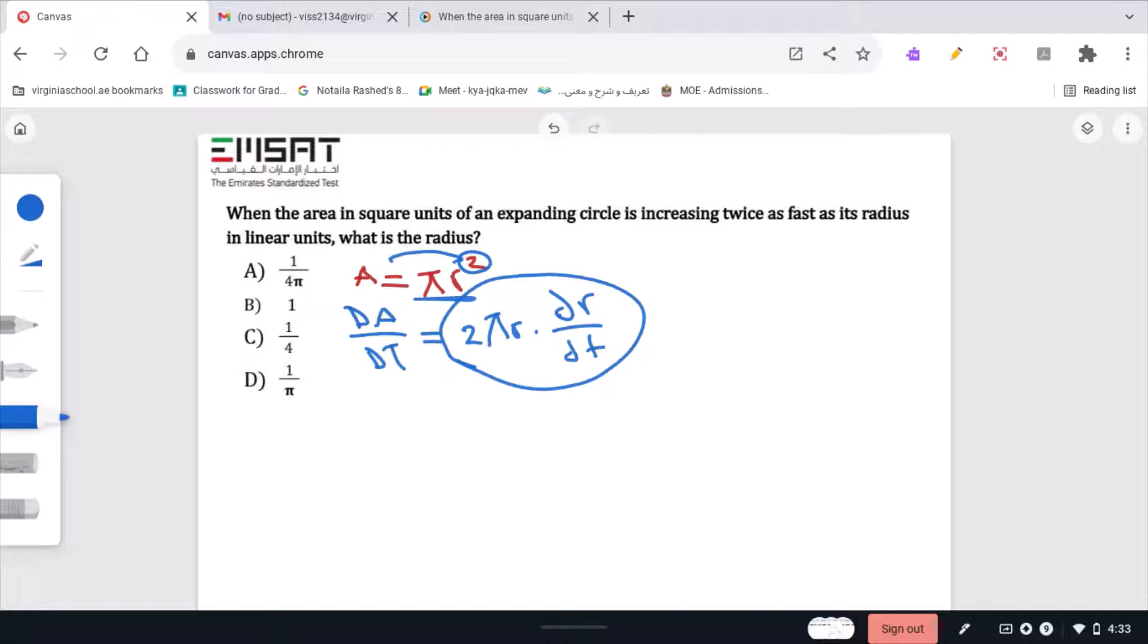The power rule says you subtract 1 from n, n being 2 in this scenario. Whenever you take the derivative of the area of a circle in terms of its radius, you always have to indicate dr/dt. That lets you know the radius is the feature that's changing, hence the area is changing.